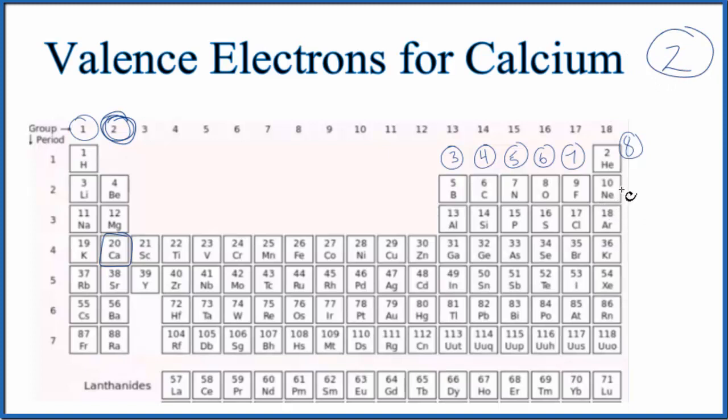We could also write the electron configuration for calcium. So calcium has 20 protons. This is the atomic number. Since all these are neutral, calcium has 20 electrons as well.